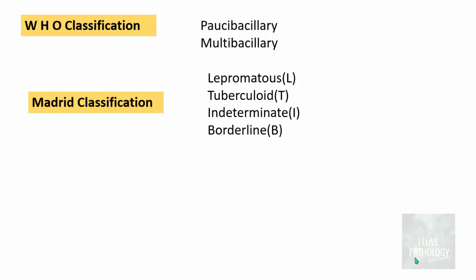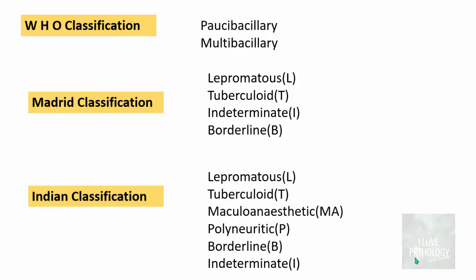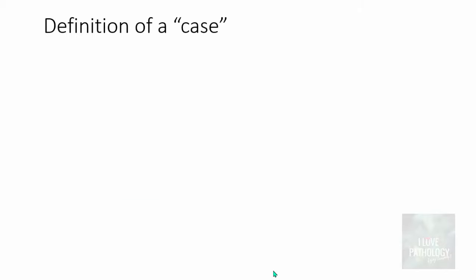The Madrid classification categorizes leprosy into lepromatous, tuberculoid, indeterminate, and borderline types. The Indian classification adds maculo-anesthetic, poly-neuritic, borderline, and indeterminate types. For today's tutorial we will concentrate on the two important extremes: lepromatous and tuberculoid type of leprosy.